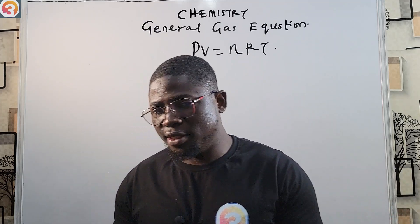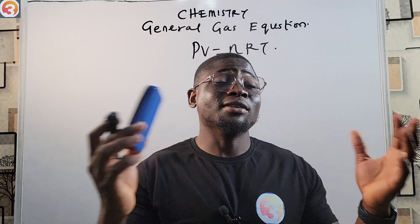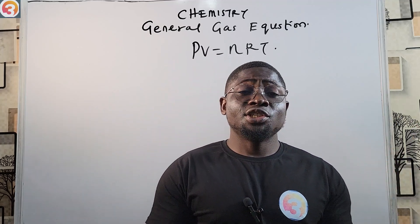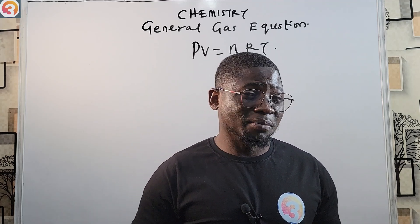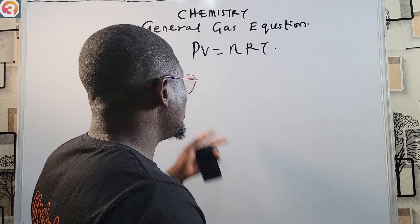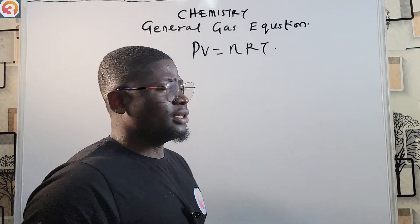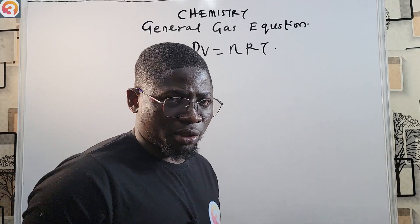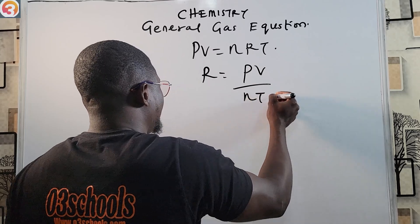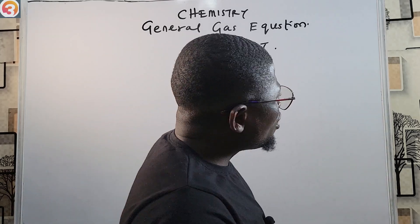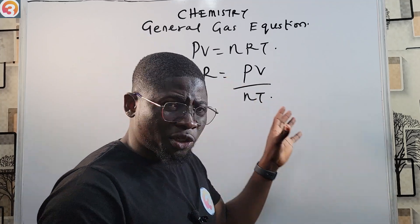If you have not done change-of-subject formula before, there is a video on JAMB mathematics on this channel — please look for it and watch it. So if we make R, the ideal gas constant, the subject of this equation, we have R equals PV over nT.